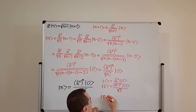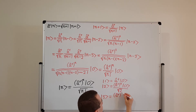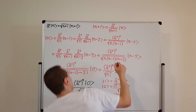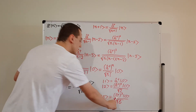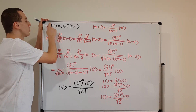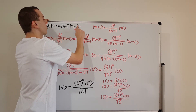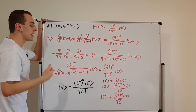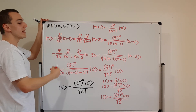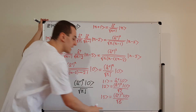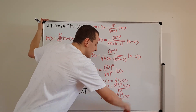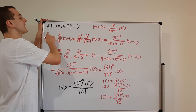For n equal to 3, we apply the raising operator three times to the ground state and divide by the square root of 3 factorial. 3 factorial is 3 times 2 times 1, which is 6. These specific cases are all consistent with what you'd expect from the original relationship — for example, applying the relationship with n equal to 2 gives a ket labeled by 3 and a square root of 3, which matches what you'd get by recursively substituting down to the ground state.